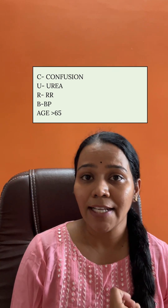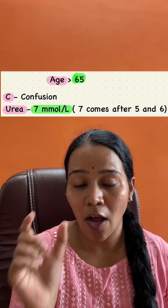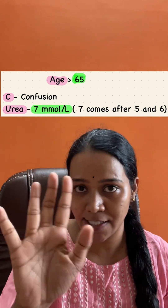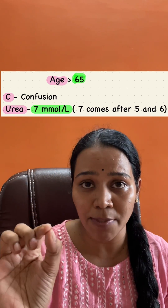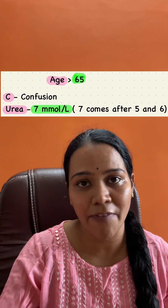First, write down 65. Now for Urea — after 5 and 6 in 65, what comes next? 7. So Urea is more than 7 millimoles per liter. Simple.